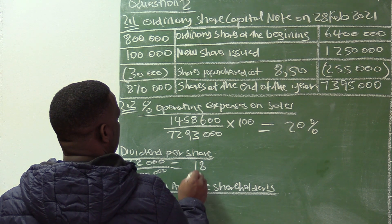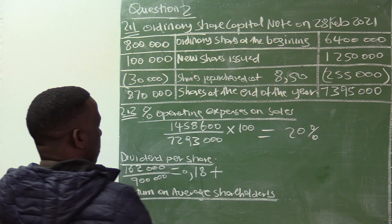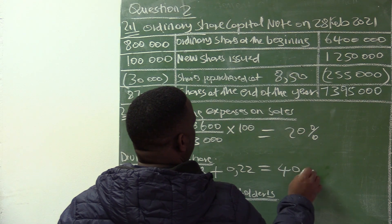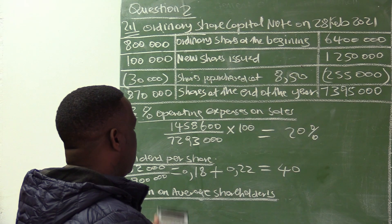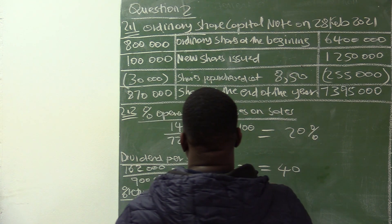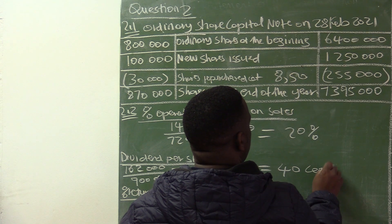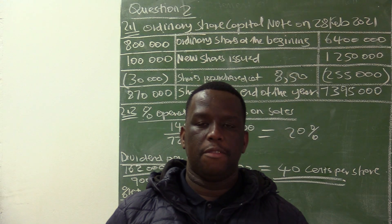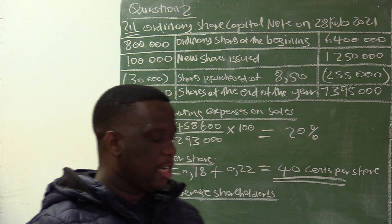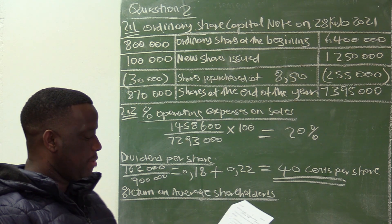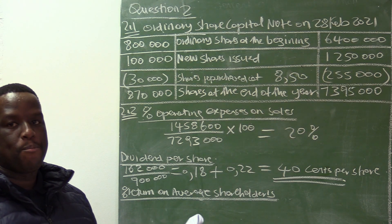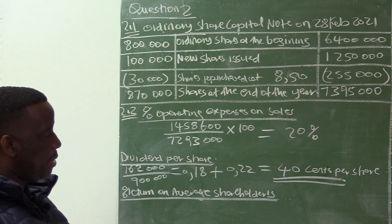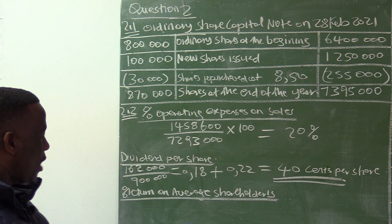The interim dividend is 18 cents plus the final dividend, which is 22 cents — so 18 plus 22. The total dividends per share is 40 cents per share. Remember, dividends is made up of interim plus final. The interim dividend per share was not given; we were given the total amount for interim dividends, so we had to calculate it by dividing by the 900,000 shares in issue at the time of payment. 18 cents plus 22 cents final gives a total of 40 cents per share.